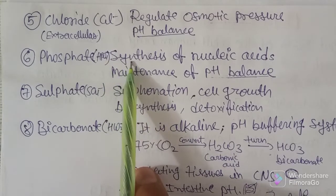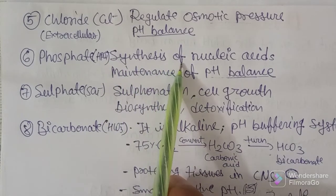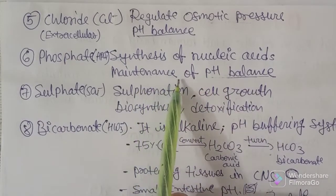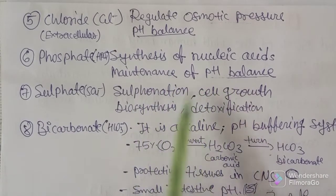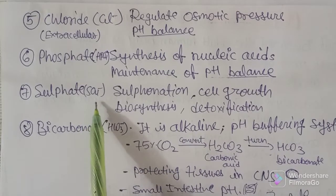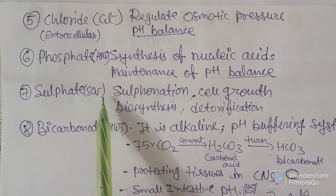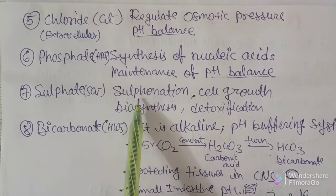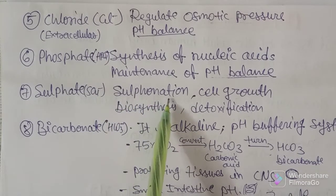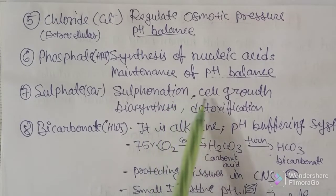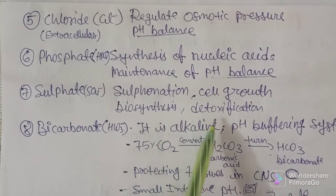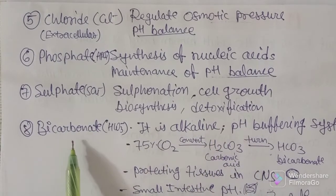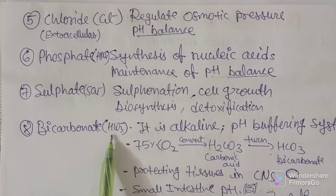Phosphate (HPO4-) is an anionic electrolyte involved in the synthesis of nucleic acids and maintenance of pH balance in the body. Sulfate (SO4-) is also an anionic electrolyte that participates in sulfonation, cell growth, biosynthesis, and detoxification.